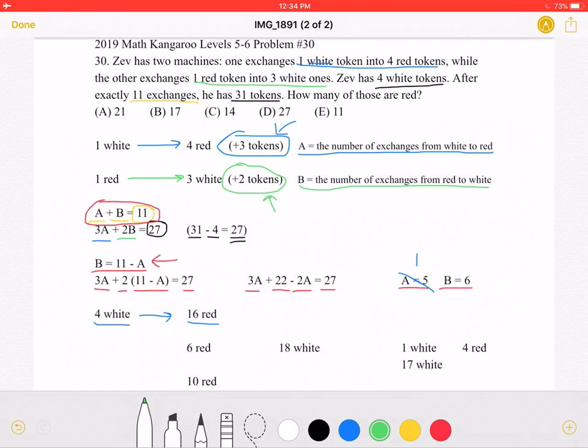Next, he will make 6 exchanges from red to white. So using 6 of the 16 red, he will make 18 white. But we need to subtract 6 red from 16 red since he still has 10 red left. So we have so far 10 red and 18 white.